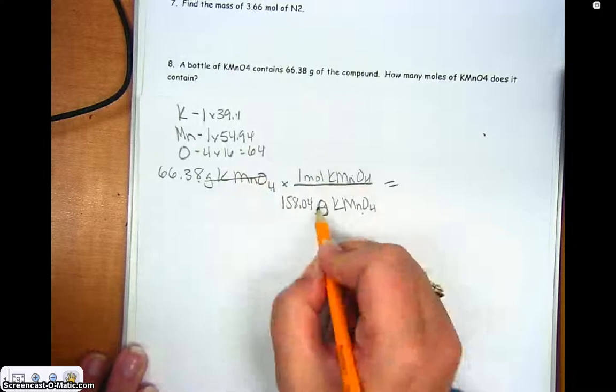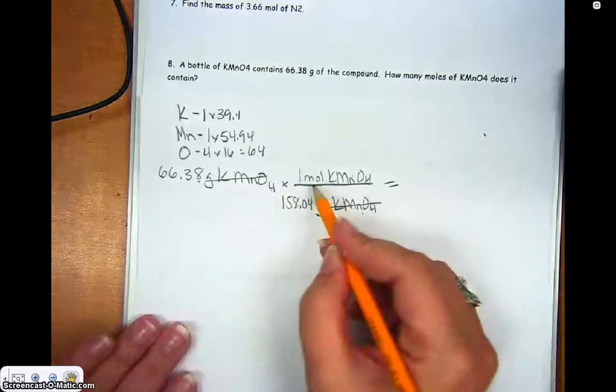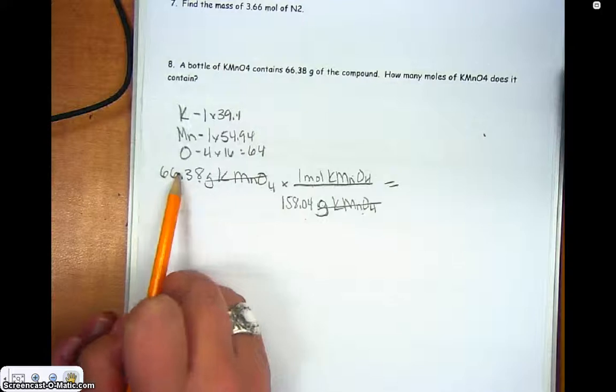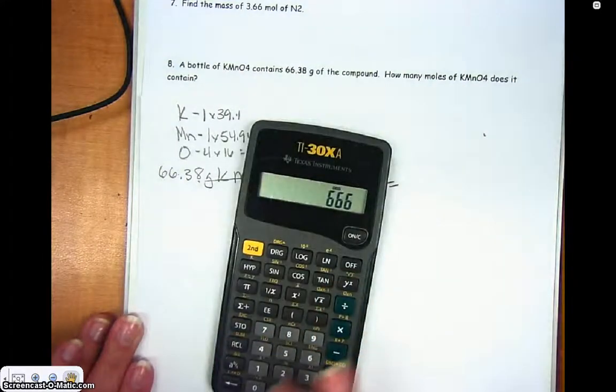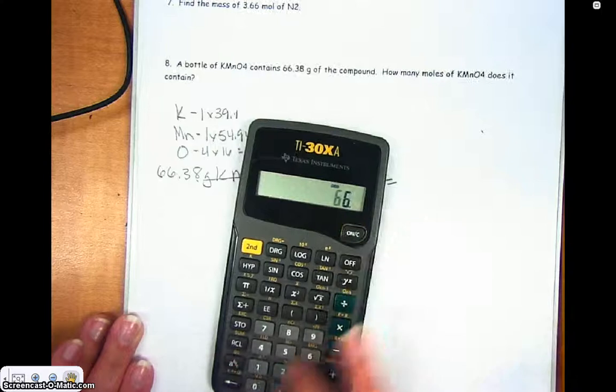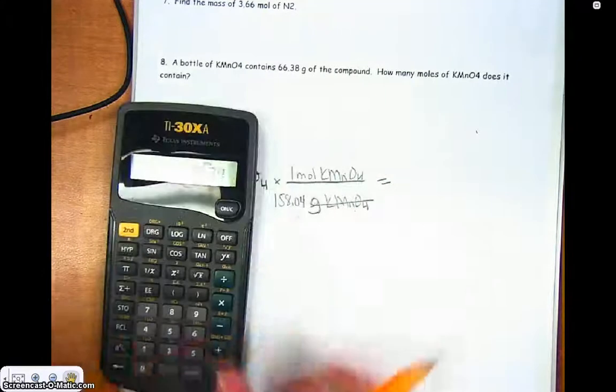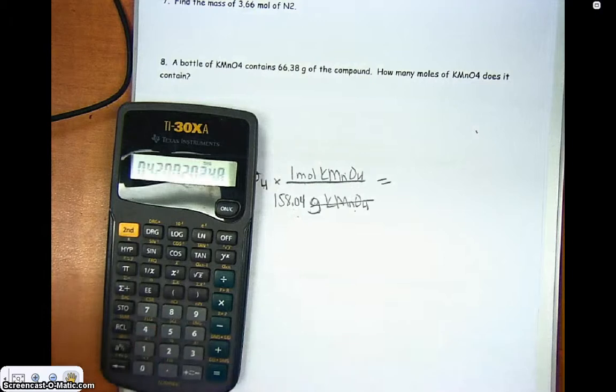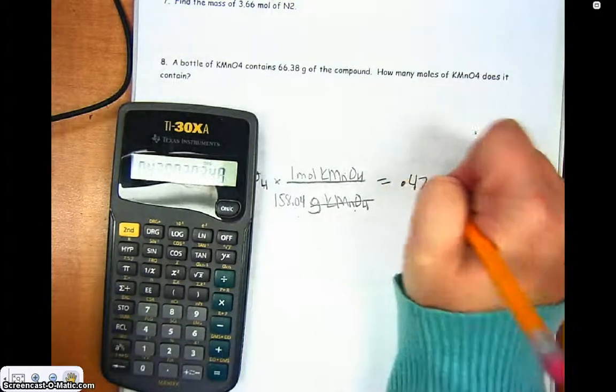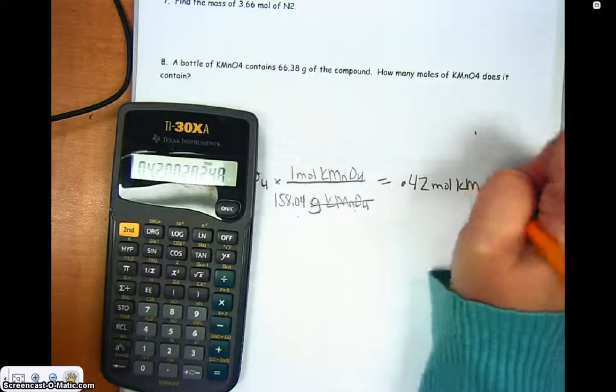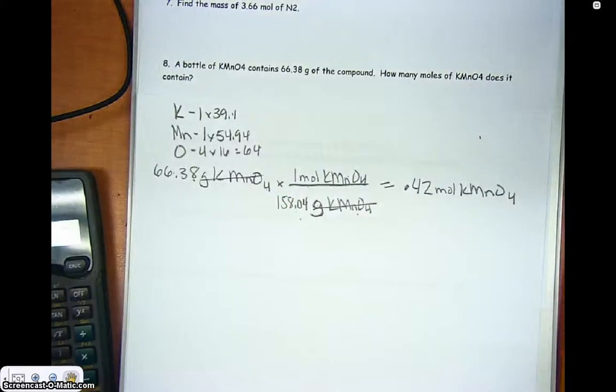And my grams unit will cancel, so I'll be left with my moles. And because this is on the bottom of the fraction, I'm going to take this number and divide it by that number. So 66.38 divided by 158.04 gives me 0.42 moles of potassium manganate. So those are two examples where we go from moles to mass and mass to moles.